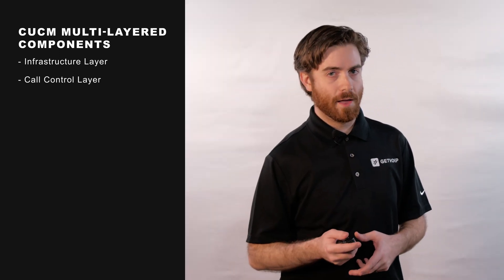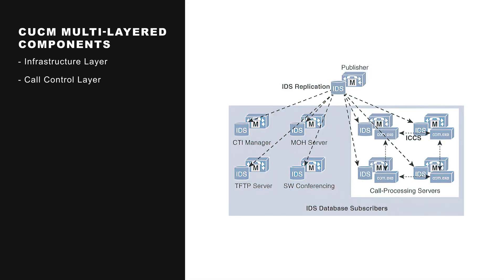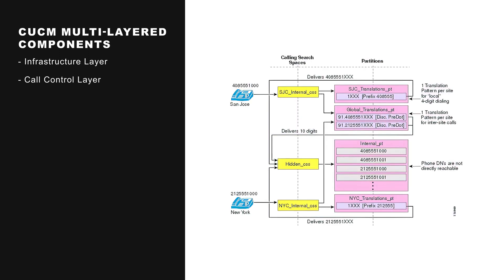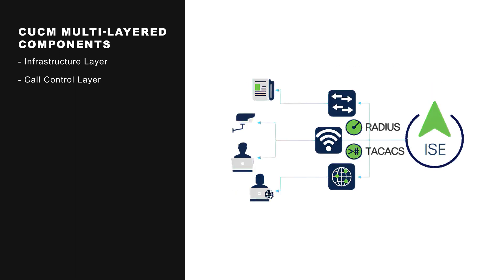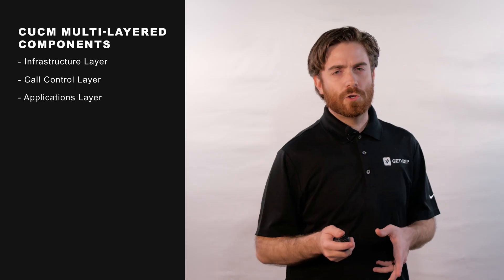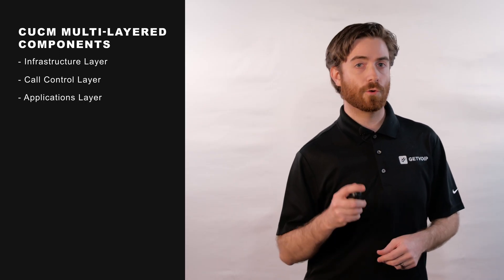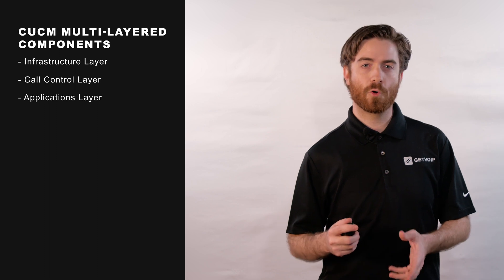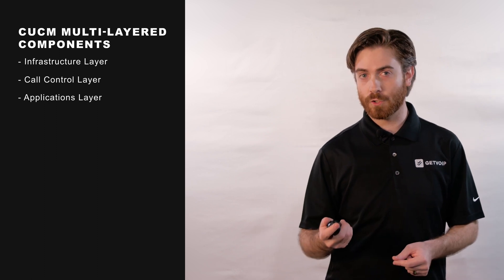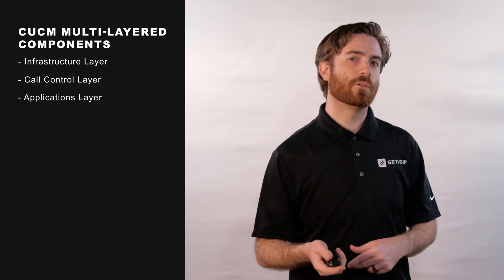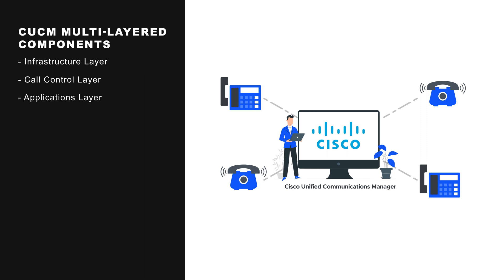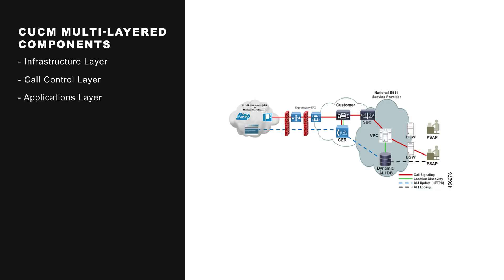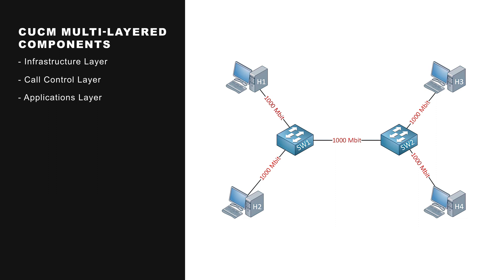Next is the call control layer, which is responsible for call processing, feature and dial plan administration, and device access and control. The applications layer integrates applications through IP, completely separate from call control and processing functions. This includes applications like Cisco Unified Interface, Cisco Emergency Responder, and other standard protocol interfaces.